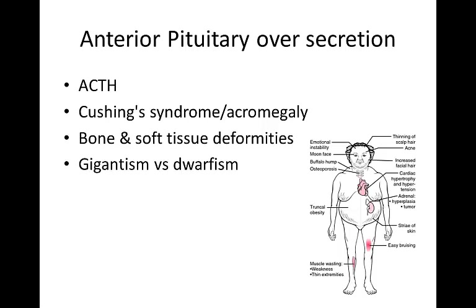Oversecretion most commonly involves ACTH or growth hormone and results in Cushing's syndrome or acromegaly. Acromegaly is an excess of growth hormone in adults and results in bone and soft tissue deformities and enlargement of the viscera without an increase in height. In children, oversecretion of growth hormone results in gigantism, with a person reaching 7 or even 8 feet tall. An insufficient secretion of growth hormone during childhood results in generalized limited growth and dwarfism.